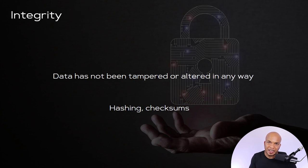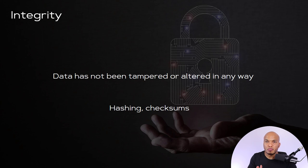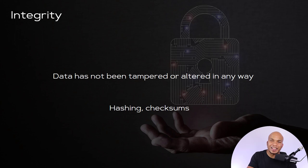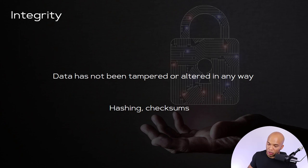We also have integrity, which means that the data has not been tampered or altered in any way. The data is as it's supposed to be — it's not been modified, we've not deleted anything, we've not added anything at all. It is pure. We would use tools like hashing and checksums to achieve this particular objective.